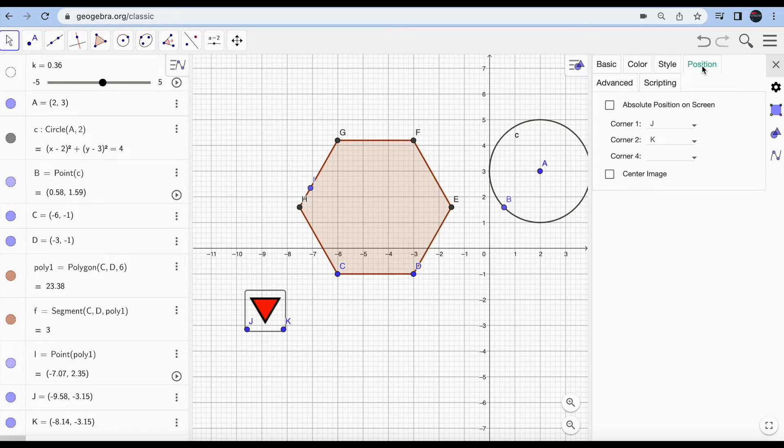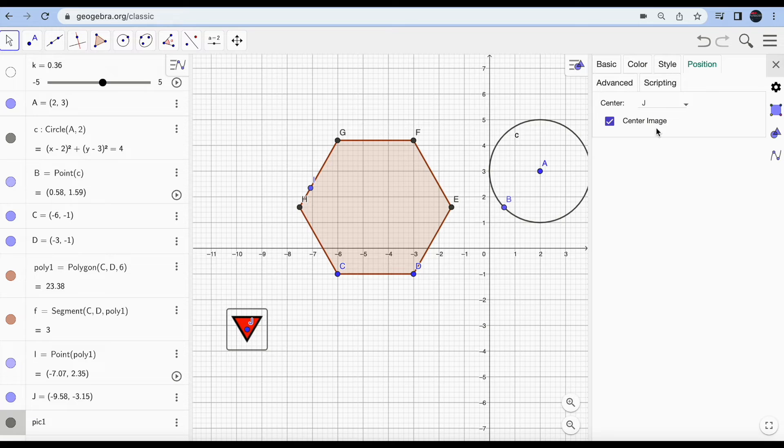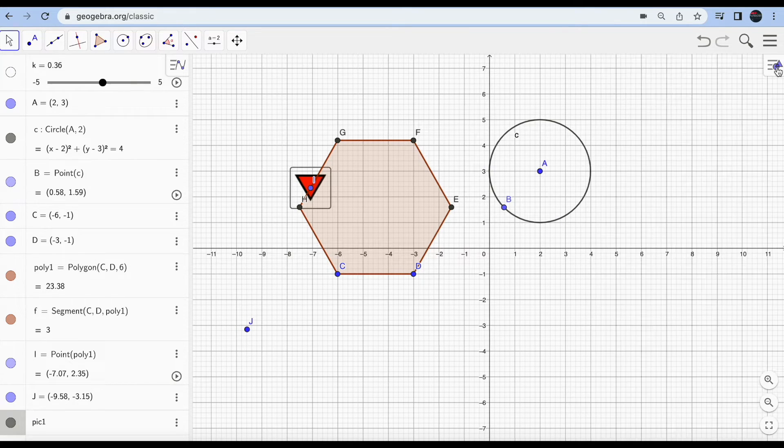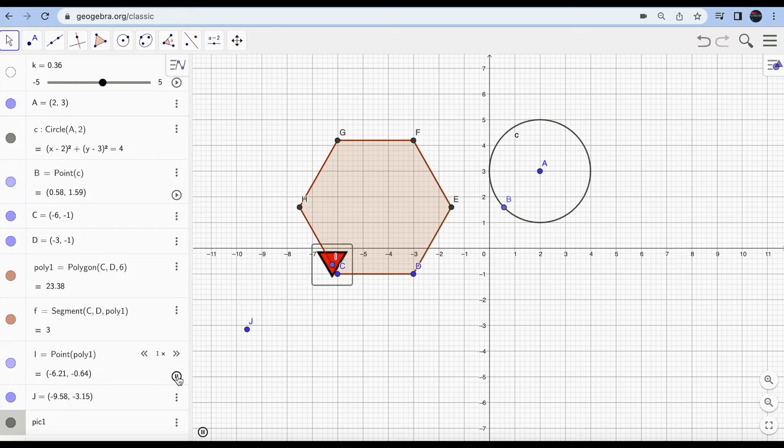What you have to do: right-click on this picture, go to settings. First of all, you change its position because I want to have this arrow with center at the point which I have just created. So go to center image and now from here you can choose the point. Now just hit the play button.